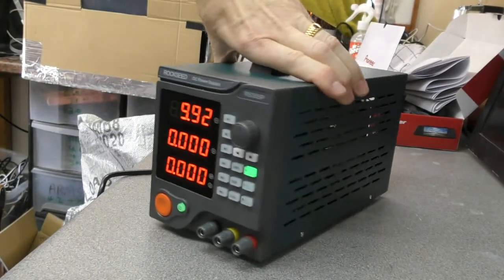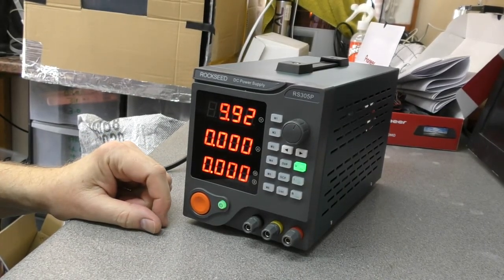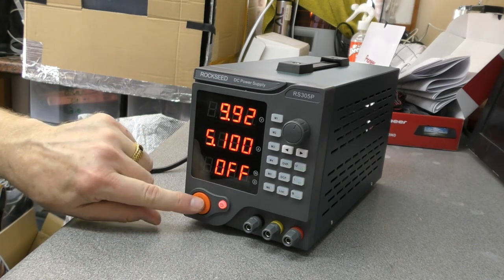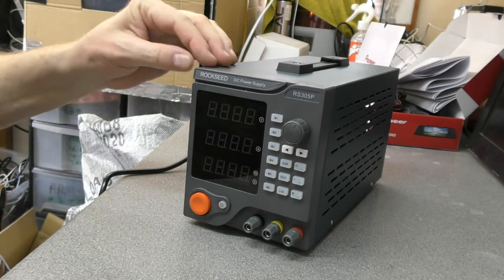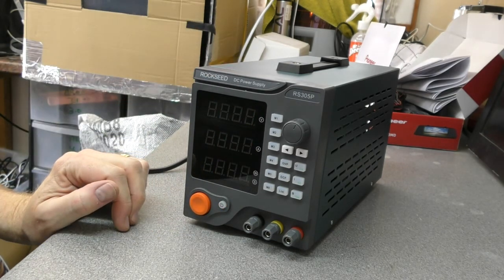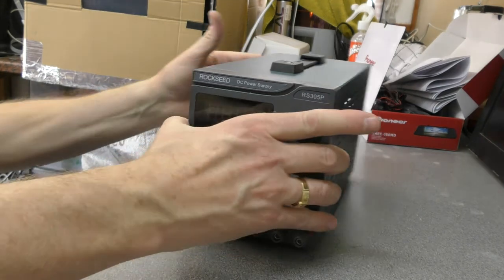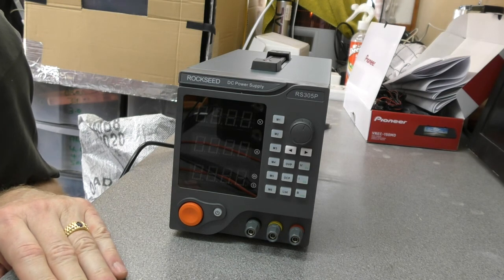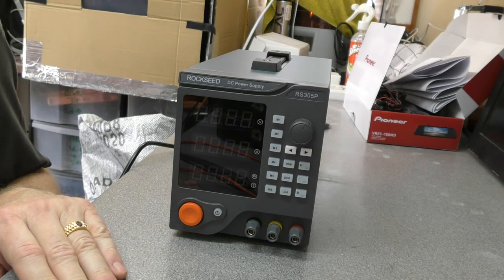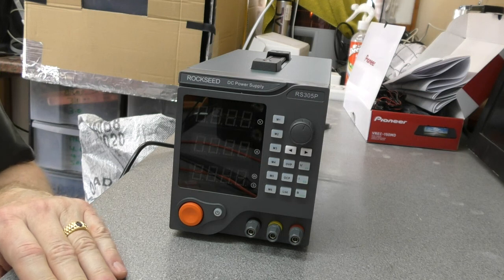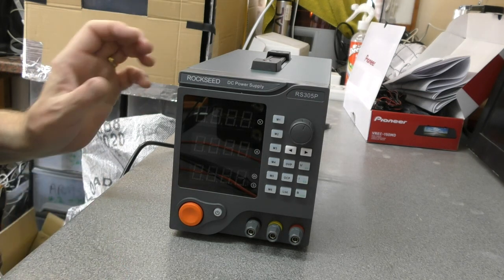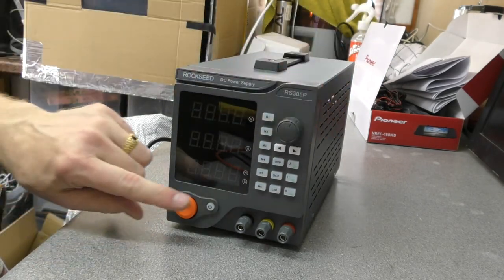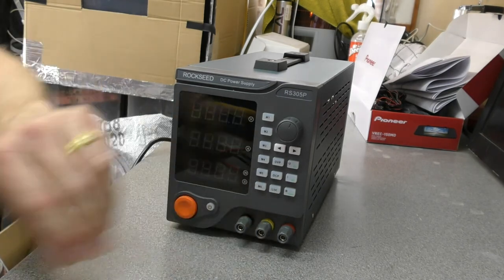So yeah. Rockseed DC power supply. The RS305P, £59 currently. I think there is a £10 voucher. So it's £65.97 less 10% and still in stock. And I think we'll be giving that a five-star rating. Certainly seems accurate and we'll do some more checks as time permits.